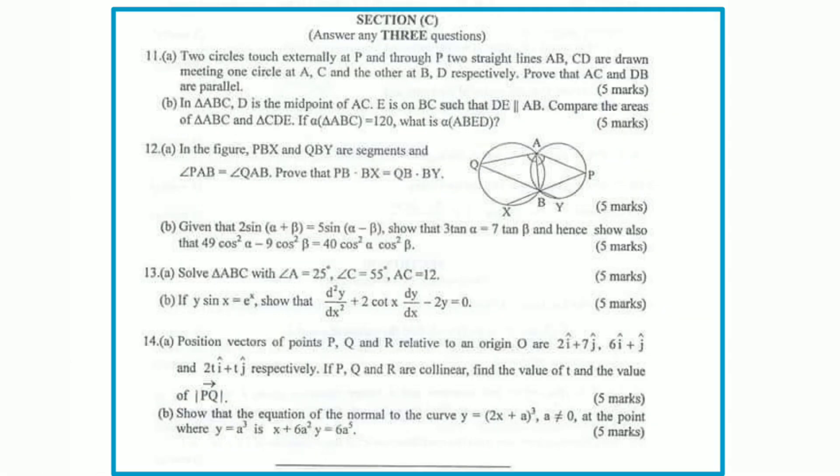Section C requires you to answer any three questions. This is different from the other sections - you have a choice here. The questions are marked accordingly, with each carrying specific marks as shown in the examination paper.